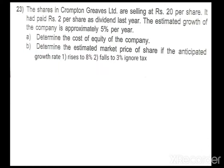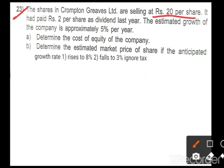Let's start today's class. The problem: shares in Crompton Graves Limited are selling at rupees 20 per share. It had paid rupees 2 per dividend for the last year. The estimated growth rate of the company is approximately 5 percent. We have to calculate two different concepts — first, determine the cost of equity of the company.